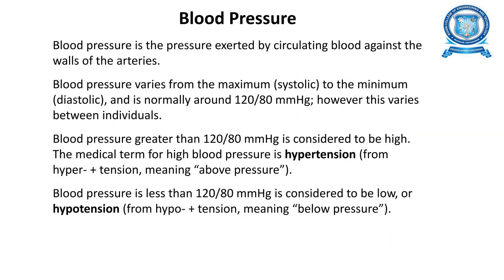Blood pressure is the pressure exerted by the circulating blood against the walls of the arteries. The maximum pressure is systolic and the minimum is diastolic. Normally it is 120/80 mmHg. Above this is considered high blood pressure, known as hypertension. Blood pressure below normal is called hypotension, meaning low pressure.